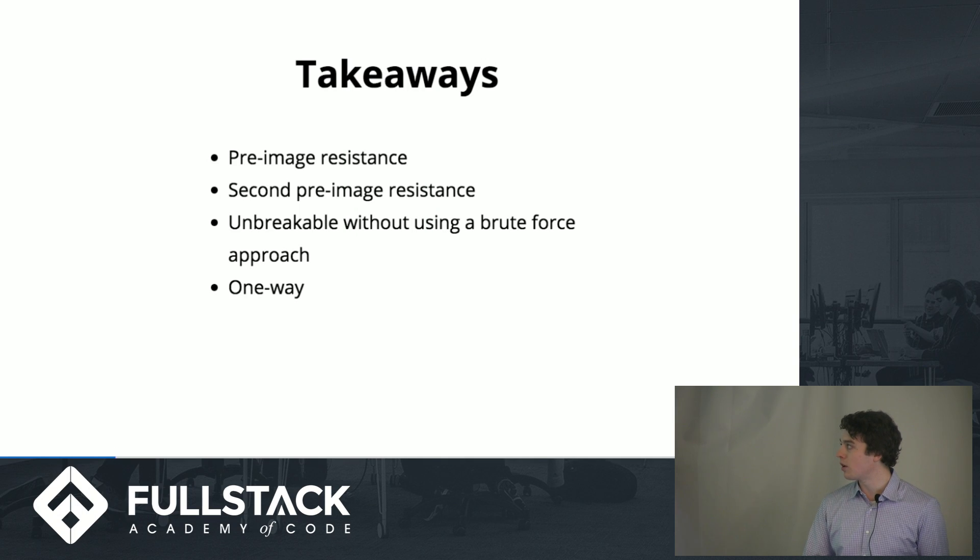So just some key takeaways about cryptographic hash functions. There's pre-image resistance—this is a cryptographic term meaning that if you have an output hash digest, there is no way to know the input value that resulted in that digest, even if you have the exact hash algorithm line for line. Second pre-image resistance means that if I give you an input, the hash function, and the hash digest output, there is also no way to find another input that will result in the same digest output without guessing.